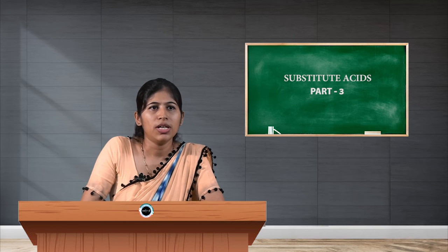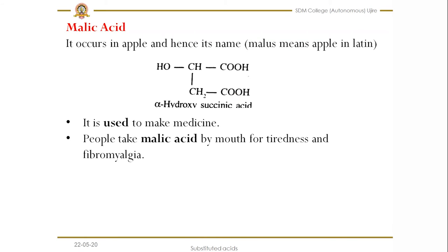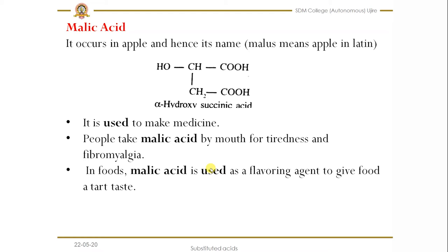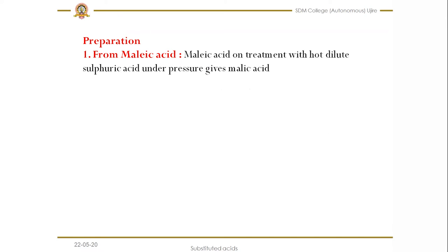There are two carboxylic groups. Malic acid is used to make medicines; people take malic acid by mouth for tiredness and fibromyalgia. In foods, malic acid is used as a flavoring agent and to give food a tart taste. In manufacturing, malic acid is used to adjust the acidity of cosmetics.